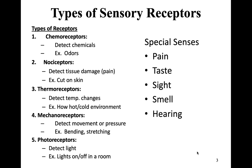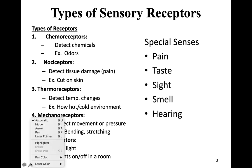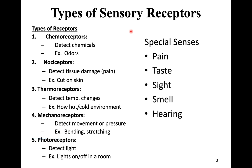The types of sensory receptors we have in our body include chemoreceptors, nociceptors, thermoreceptors, mechanoreceptors, and photoreceptors. Chemoreceptors — like the prefix 'chemo' states — detect chemicals like odors or flavors.